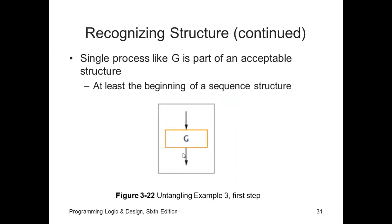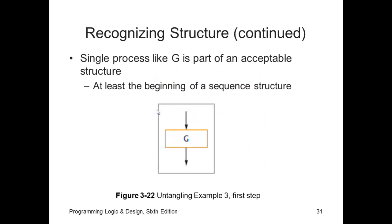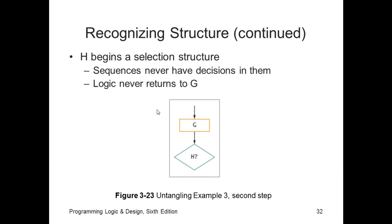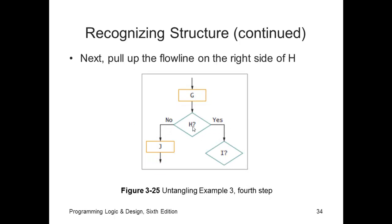Let's restructure that example three. We start with the single process. I'm going to back up and show you. I'm going to start with G. Then we're going to go into the decision where we evaluate H. And if H evaluates to false or no, we want to do process J. But if H evaluates to yes, then we want to evaluate I.